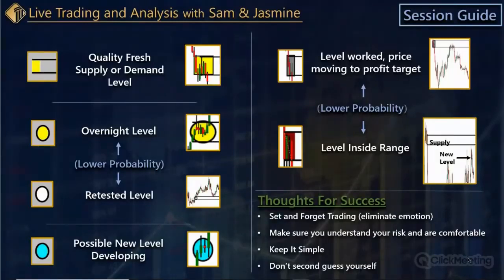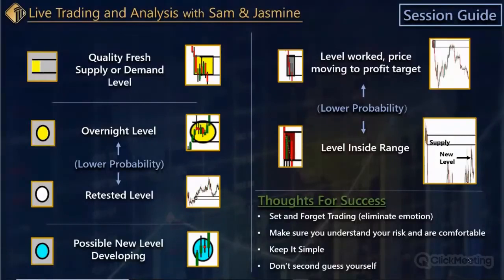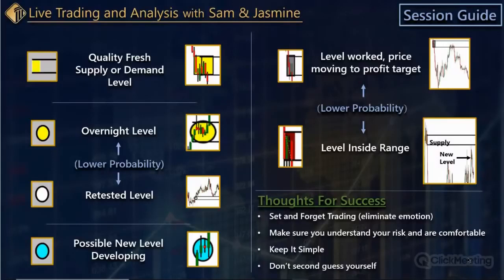The colors help you understand it. The first one — a quality fresh supply or demand zone — is going to be a yellow box. That means it meets the criteria for structure and location, and it's fresh, meaning it's had no pullbacks.